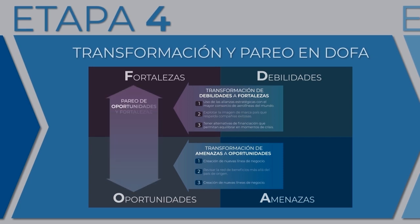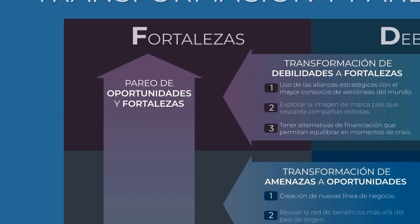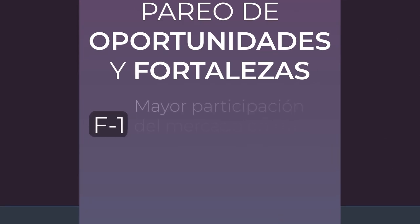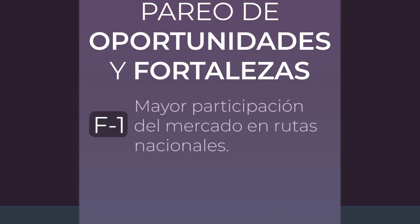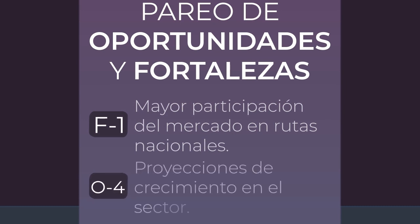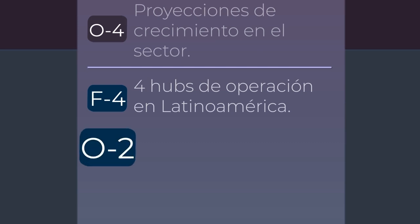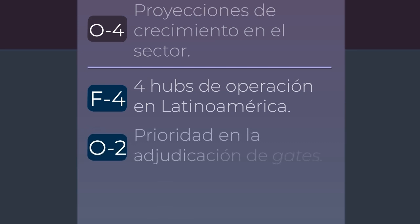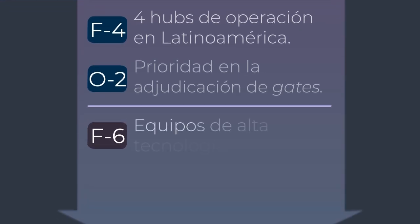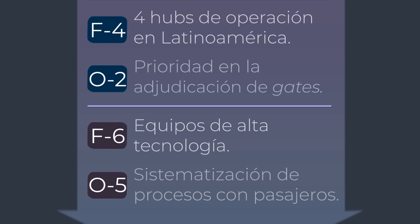The emparejar of fortalezas with opportunities would be like this: 1. F1 — La mayor participación del mercado en rutas nacionales con O4: Proyecciones de crecimiento en el transporte doméstico e internacional aéreo de pasajeros. 2. F4 — Tiene 4 hubs de operación en Latinoamérica con O2: Prioridad en la adjudicación de gates en el aeropuerto donde tiene su hub. 3. F6 — Equipos de alta tecnología tanto en aeronaves como en gestión de pasajeros y equipajes con O5: Sistematización de procesos con pasajeros, tracking luggage app, ticketing y marketing.